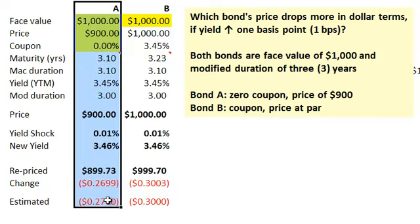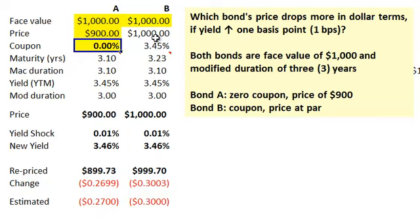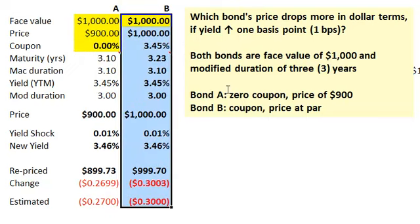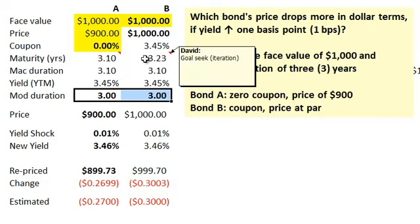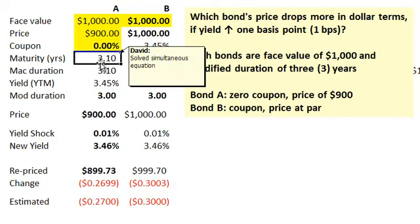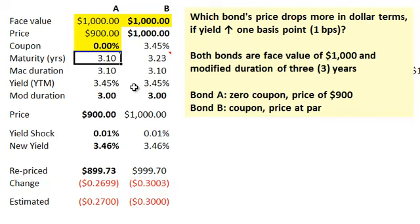Here is bond A, the zero coupon bond. Notice the zero that I have as an input. Here's bond B, the coupon-bearing bond priced at par. Notice its price equals its face value. Here I've restated the question: which bond's price drops more in dollar terms if yield shifts up one basis point? Both bonds have face value of a thousand and modified duration of three years. I had to solve for the exact underlying assumptions here. The answer for maturity requires solving two simultaneous equations. Let's not worry about that now.